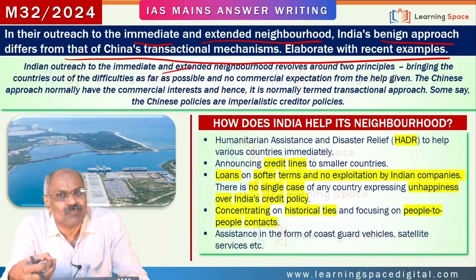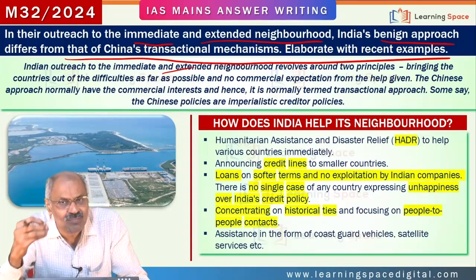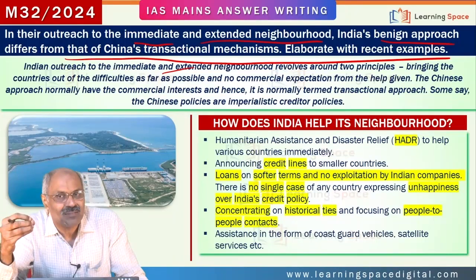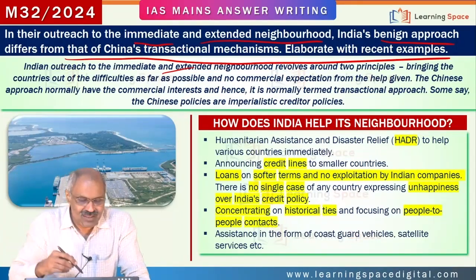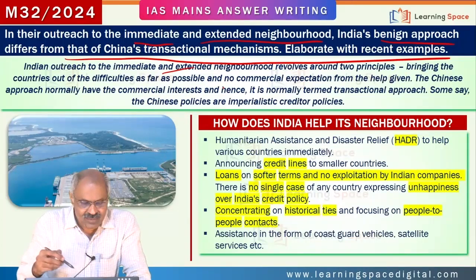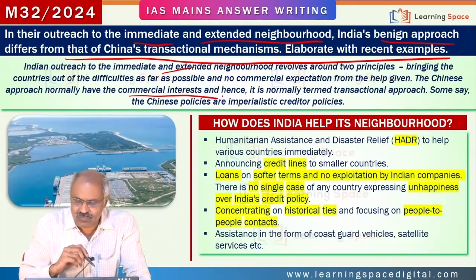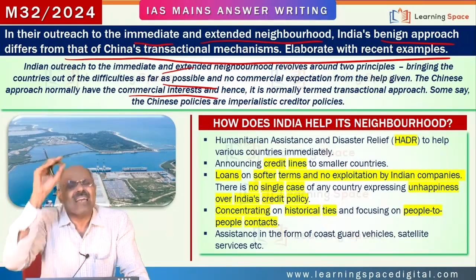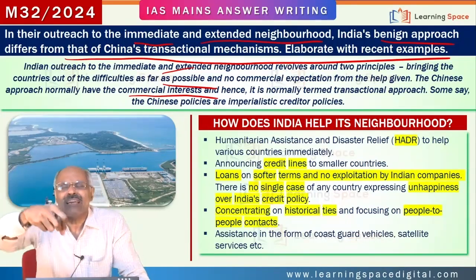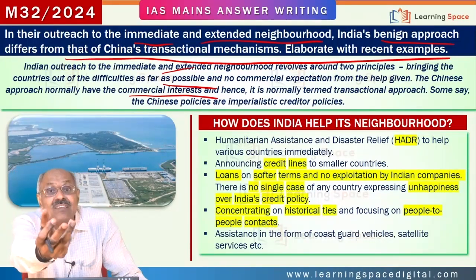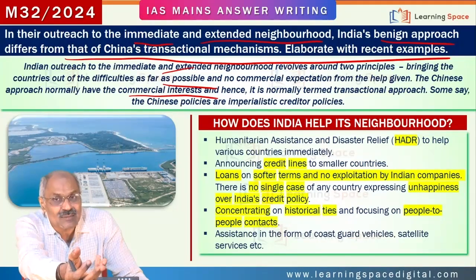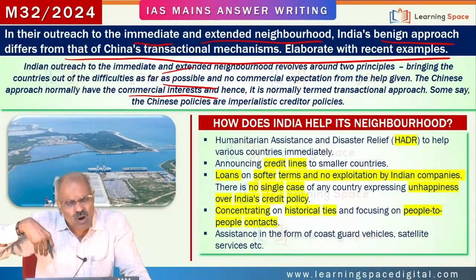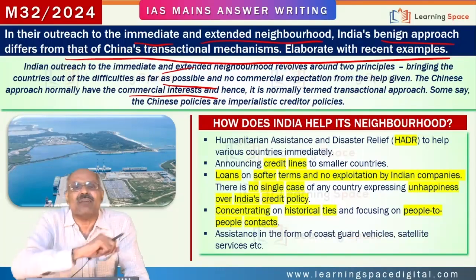China also may be doing such things, but China's approach predominantly is an imperialistic credit policy. India's approach is based on two principles: help the country as much as possible to bring it out of problems — as India helped Sri Lanka in recent times — and at the same time, don't expect any commercial return. India may want some strategic benefits, but not commercial benefits. But China wants commercial benefits — not only to that country, but to the firms working from China.